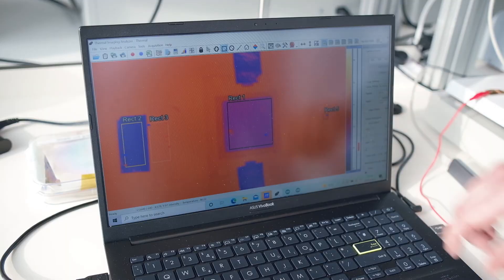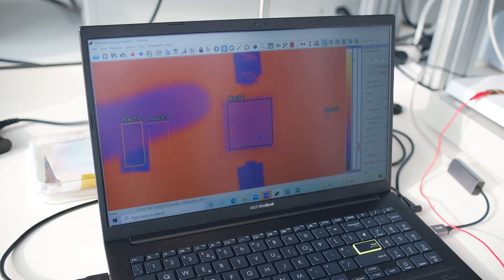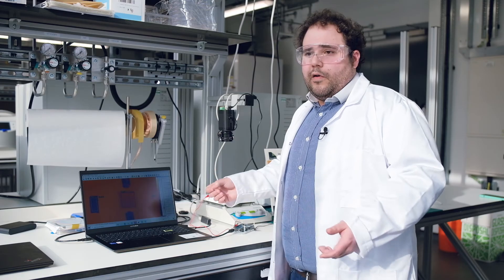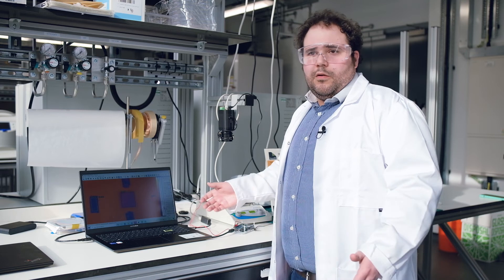You see, as we apply a voltage to the device we start to intercalate into the graphene layers and this changes and modulates the emissivity. We can use this technology to provide radiative functions to satellites, possibly even spacesuits or more. In the medium term we are planning to become subsystem suppliers to the space and defence industry.